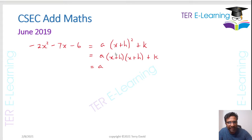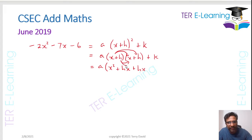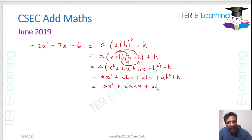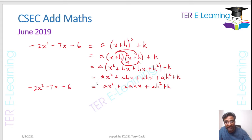Expanding (x + h)(x + h): x times x gives x squared, x times h gives hx, h times x gives another hx, and h times h gives h squared, plus k. Multiplying everything by a gives: ax squared plus 2ahx plus ah squared plus k. The whole purpose of expanding the right-hand side is so that we can equate coefficients, because minus 2x squared minus 7x minus 6 equals that whole expression.